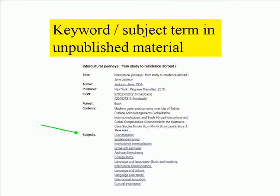When you have found a book or an article you wish to use, you can look it up in, for example, a database and use its information about this particular book or article. Material added in databases are provided with words or terms that describe the contents of the material. These words are normally called subject terms, keywords or descriptors, depending on which database you are using.